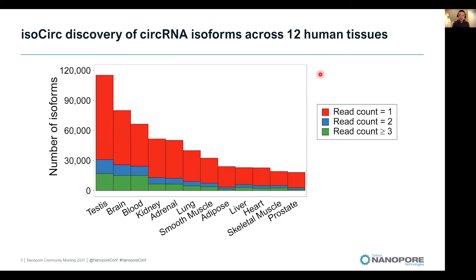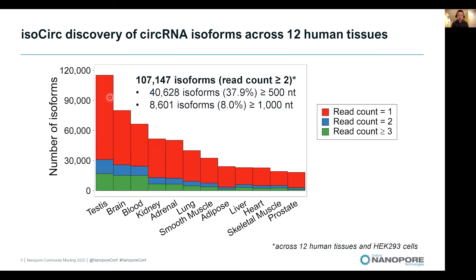We also applied ISOCIRC to a broad panel of 12 different human tissues. Within each human tissue, ISOCIRC identified tens of thousands of circular RNA isoforms. Some tissues, such as testes and brain, have a large number of circular RNA isoforms detected, which is consistent with prior knowledge about circular RNA isoform complexity based on short-read sequencing. Aggregating all isoforms detected across the 12 tissues and HEK-293 cells, we identified over 100,000 circular RNA isoforms. Among them, 40,000 are larger than 500 nucleotides, and almost 9,000 isoforms are longer than 1,000 nucleotides in length — the kind that cannot be detected or reconstructed using short-read-based methods.